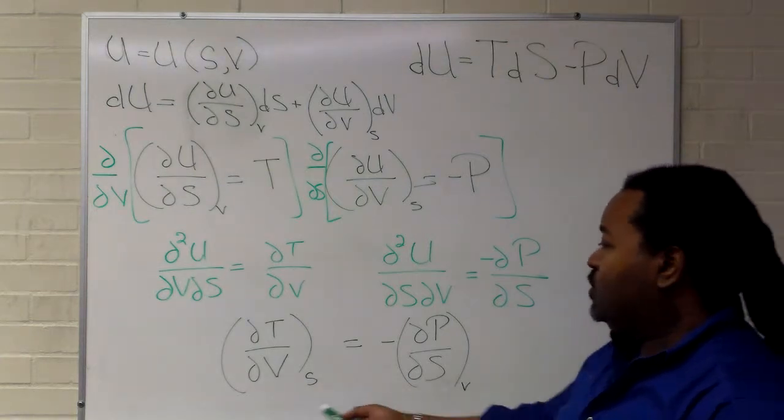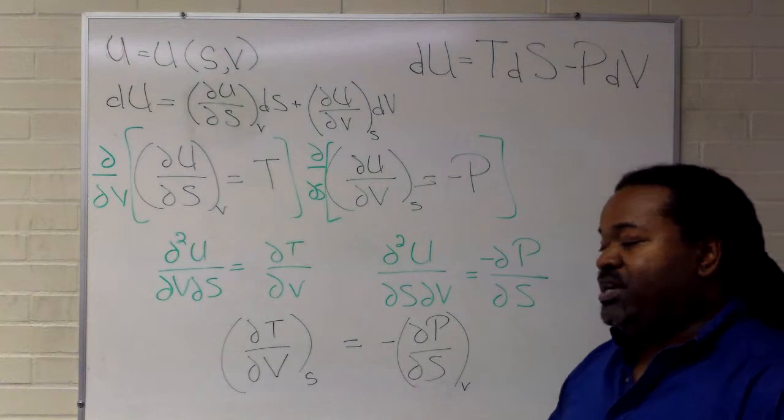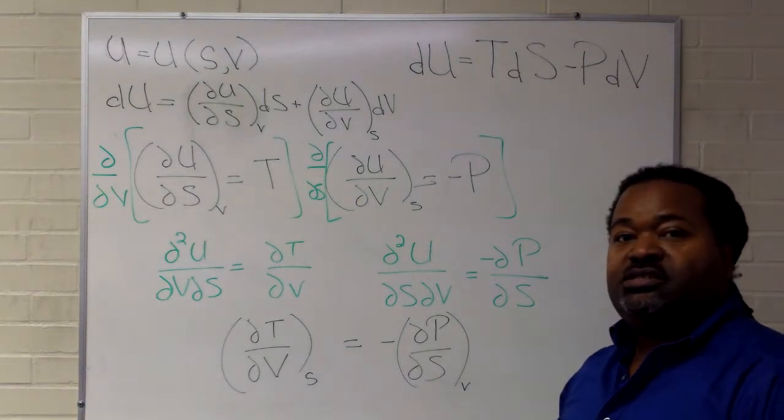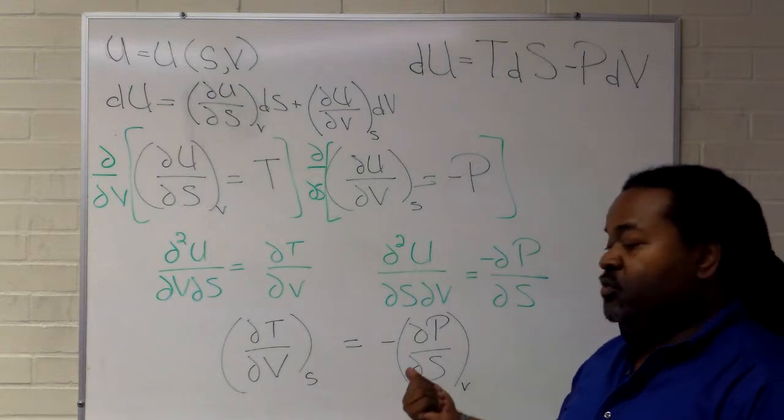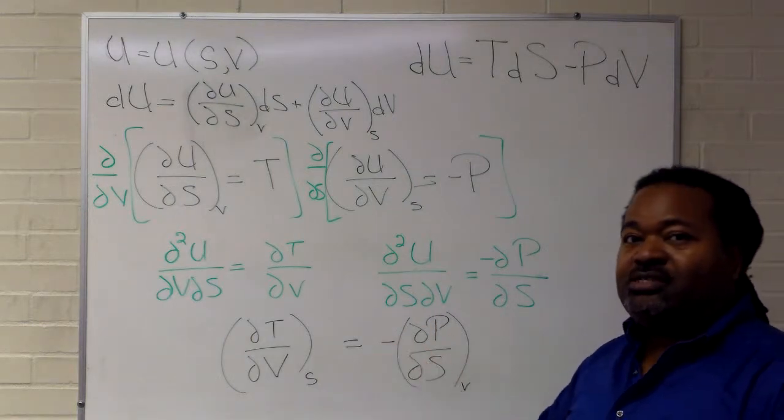So the resulting quantity here is the Maxwell relation, and you can actually derive these for all of your principal thermodynamic energies: u, h, a, and g.